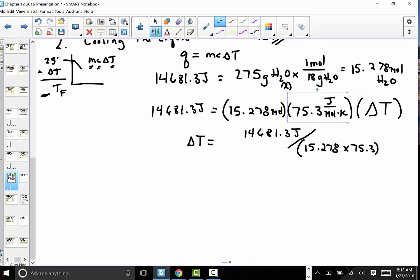And let's hit that together, be sure we're getting the same answer. So 14681.3 divided by parenthesis 15.278 times 75.3, close parenthesis. We want to make sure we're taking the product on the bottom. Don't make a calculator error and forget those parenthesis. 14681.3 divided by parenthesis 15.278 times 75.3. 12.76 is our change in temperature. It's not our answer, it's how much it changed by.